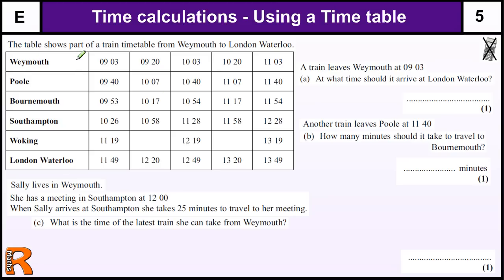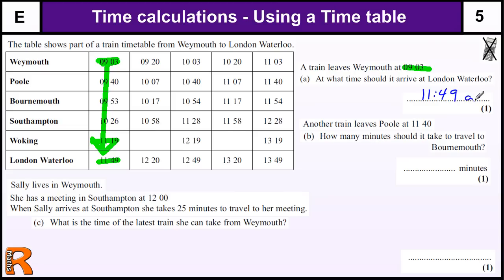We have a timetable for trains going from Weymouth to London Waterloo. The train leaves Weymouth at 9:03 — so that's this one. Coming down the timetable, we can find the time it arrives at London Waterloo, which is 11:49. That's a.m., and we'd be okay just writing 11:49 because it's in 24-hour clock.